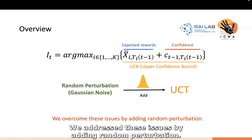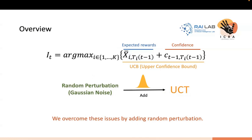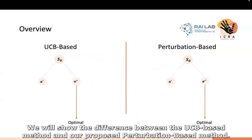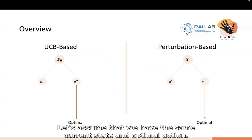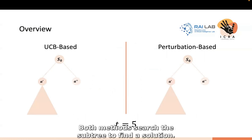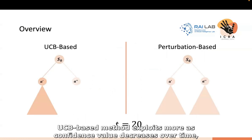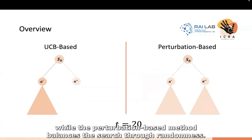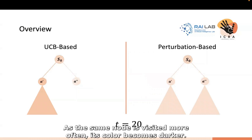We address these issues by adding random perturbation. We will show the difference between the UCB-based method and our proposed perturbation-based method. Let's assume that we have the same current state and optimal action. Both methods search the sub-tree to find the solution. UCB-based methods explore more as confidence value decreases over time, while the perturbation-based method balances the search through randomness. As the same node is visited more often, its color becomes darker.